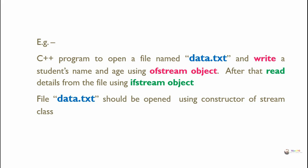In this case we have only one file, which is data.txt. By using ofstream, first we write some details into the file, and by using ifstream we read the details from the file. To open the file using ofstream and ifstream, we have to use their constructor.